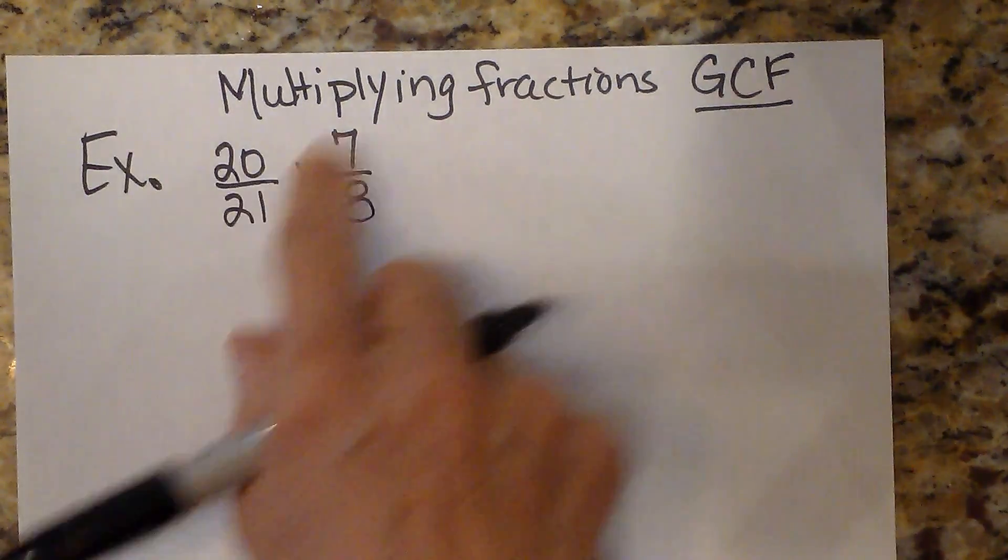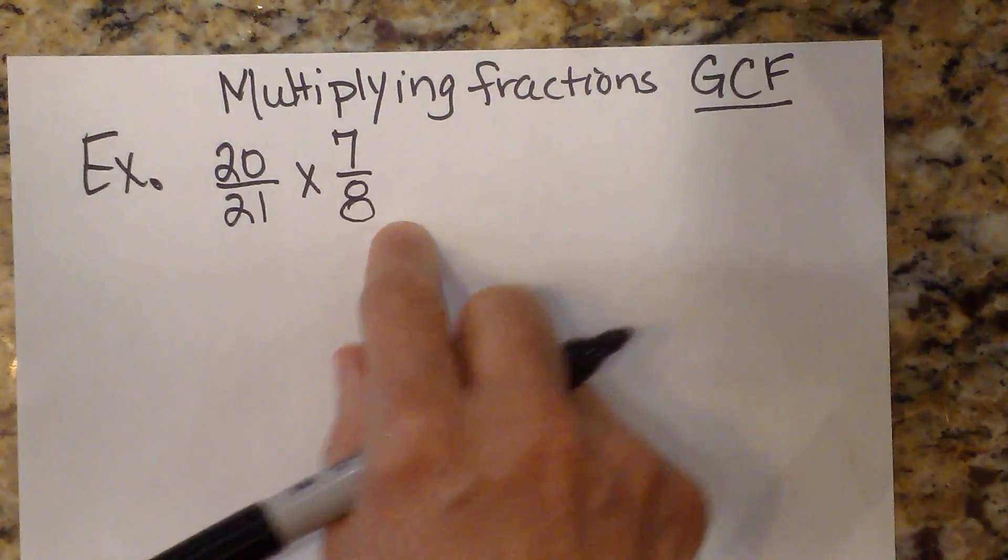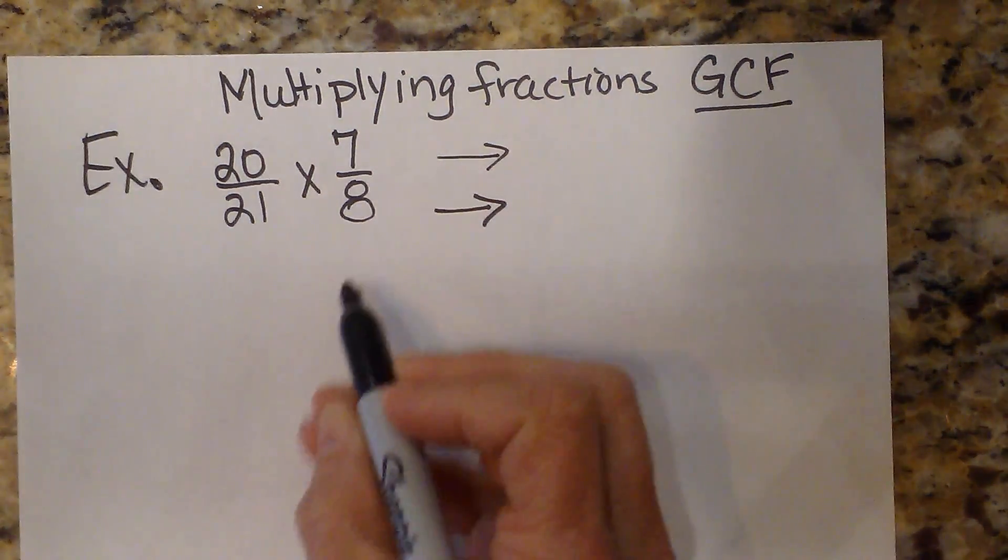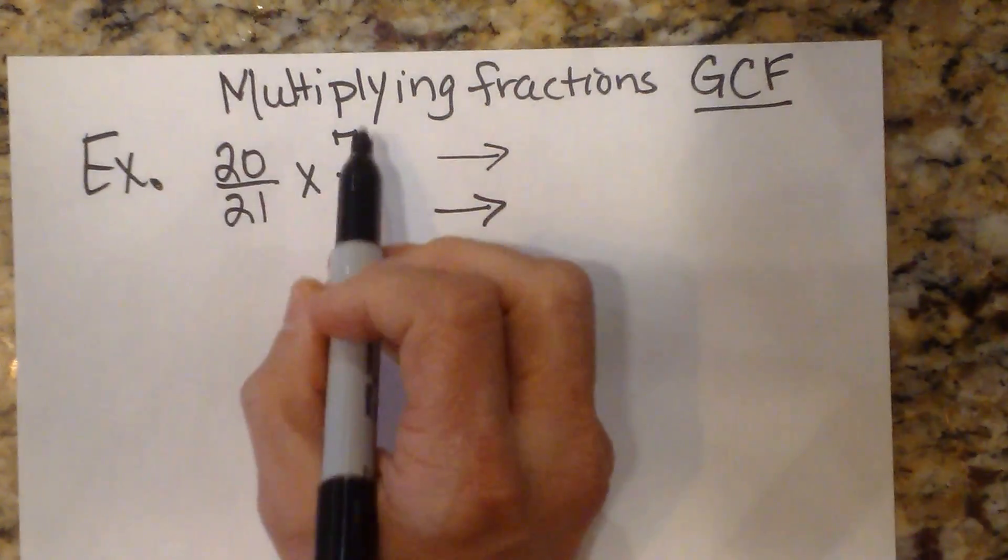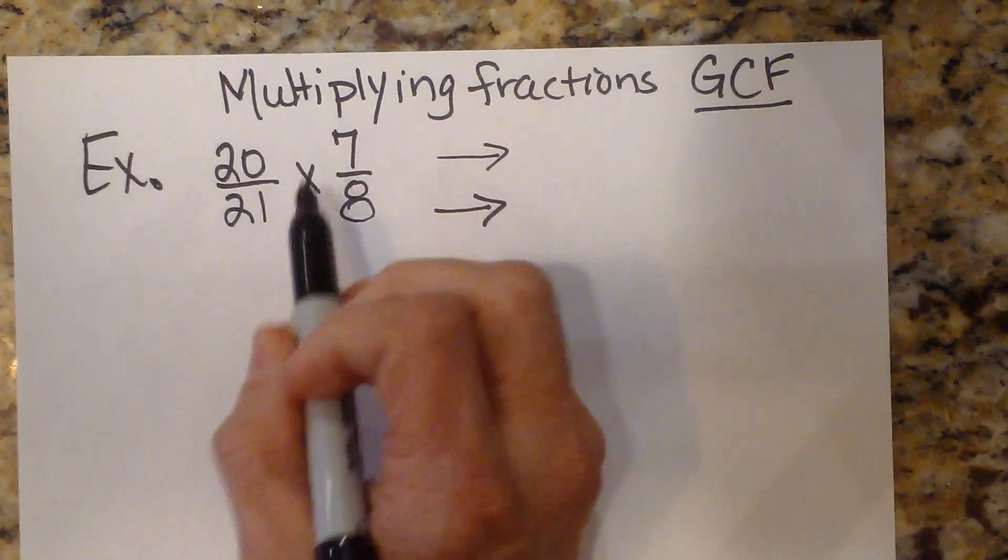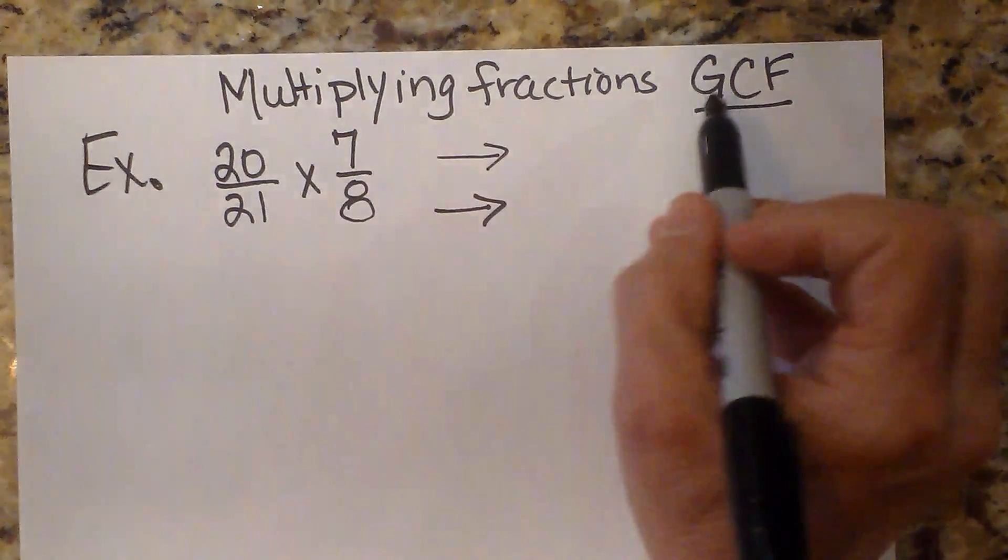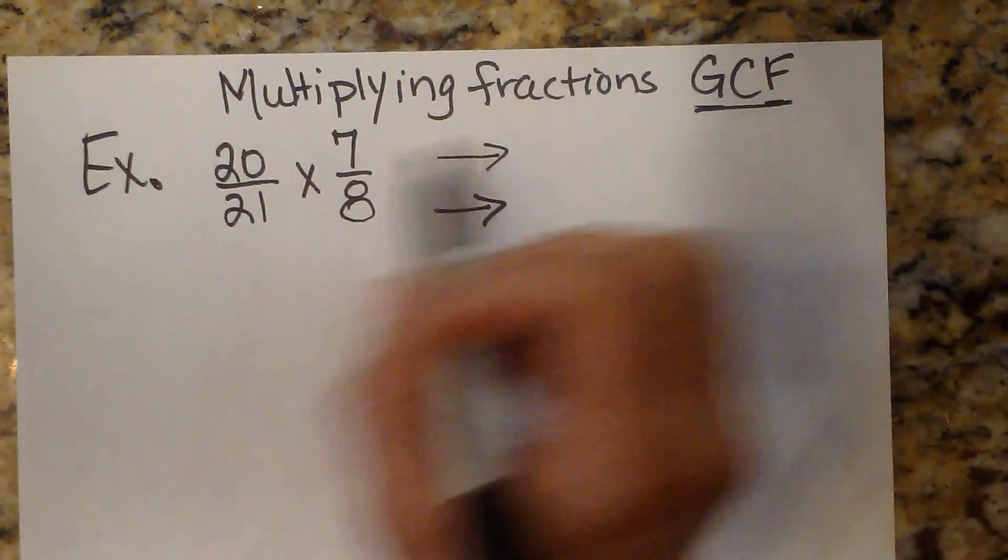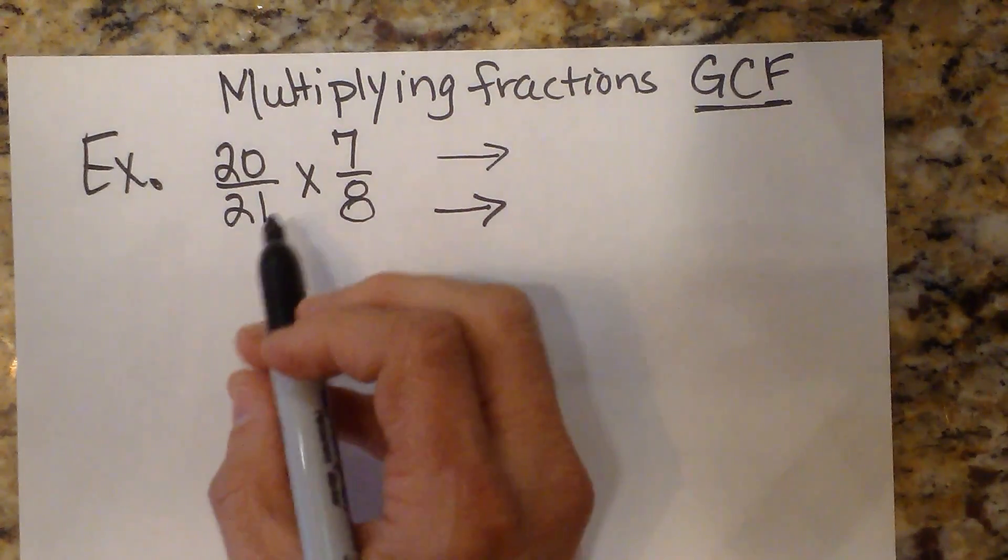When we're multiplying two fractions together, you want to multiply the top to the top and the bottom to the bottom. But if you'll notice, 20 times 7 and 21 times 8—those are very large numbers. So what we want to do is factor those down so that we can cancel out terms.